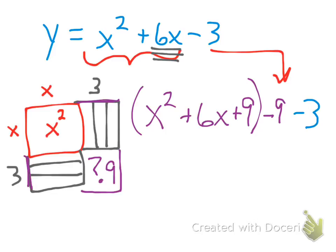My square now, this set of parentheses, is an x plus 3 square. And then combining like terms, minus 12. From there I can figure out my vertex and I can graph it.